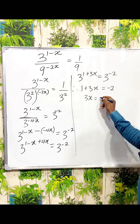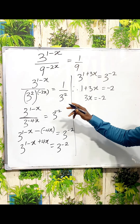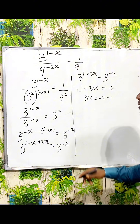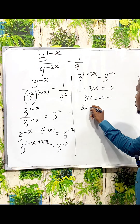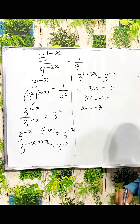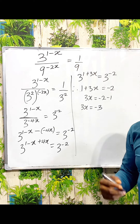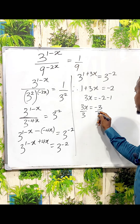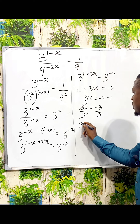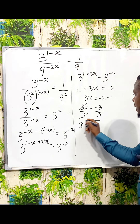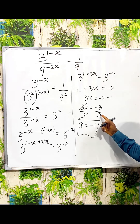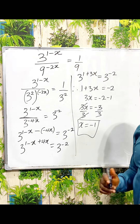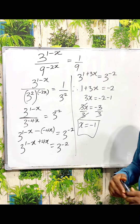3x is equal to minus 2. When this one crosses over, it turns to minus. So 3x should be equal to minus 3. In order to get the value of x, you have to divide both sides by 3. When you do that, x is minus 1 because minus 3 divided by 3 is minus 1. And this is just the value of x that satisfies this equation.